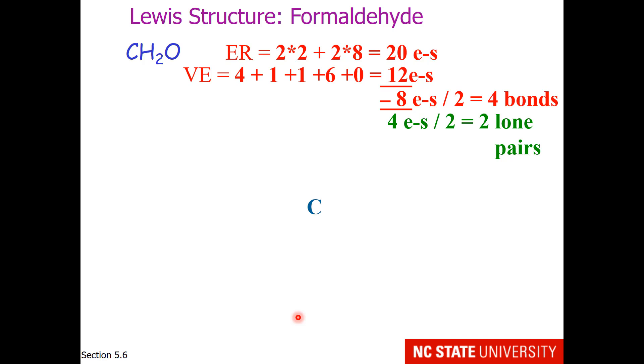Naturally, carbon goes in the middle. The other atoms are around the outside. Each atom will get 1 bond, but we need 4 bonds. Now hopefully at this point, it doesn't make sense to you to give hydrogen an additional bond. Hydrogen is happy with a duet of electrons. So that extra bond must go between carbon and oxygen.